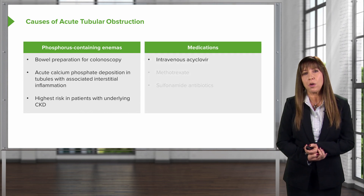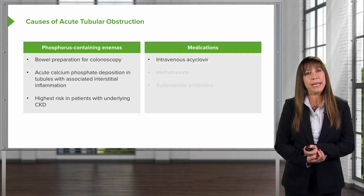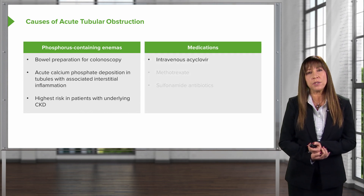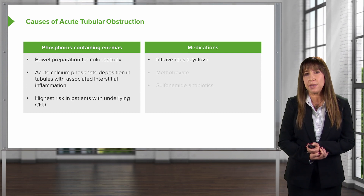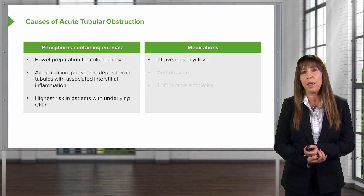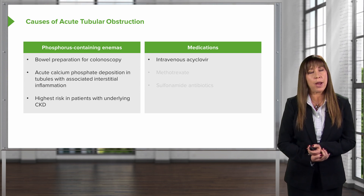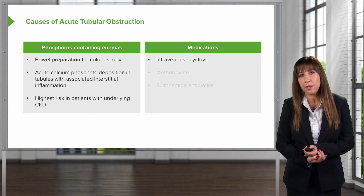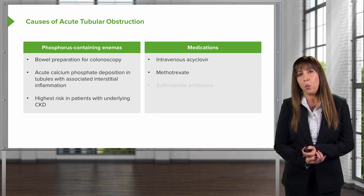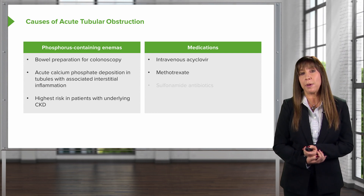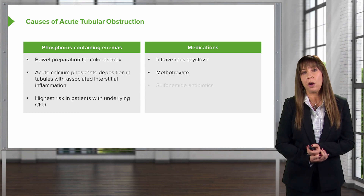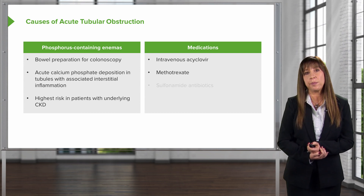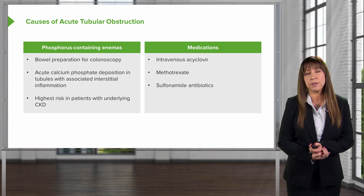Medications are also important, and understanding what your patients are receiving is key. We can see medication-induced crystalline nephropathy with intravenous acyclovir — for example, in a patient presenting with HSV encephalitis — with intravenous methotrexate used in chemotherapy, and with sulfonamide antibiotics.